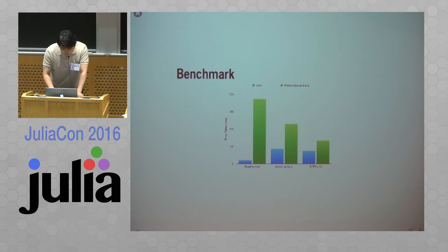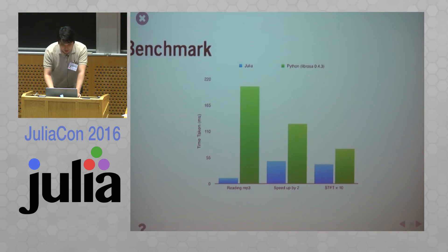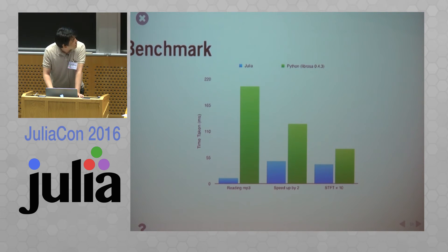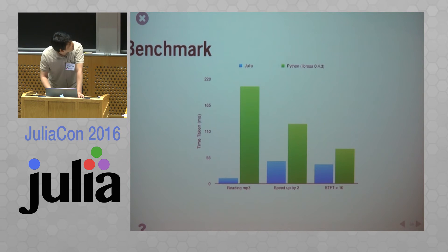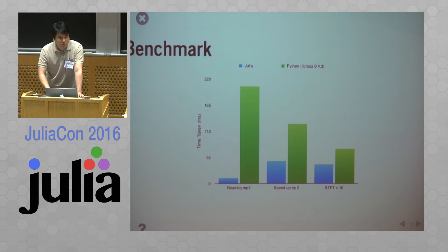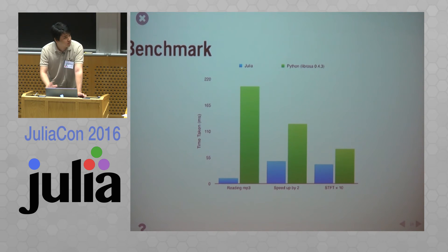MFCC is a very widely used audio feature — it is just the discrete cosine transform of the mel spectrogram. I ran a small benchmark comparing the performance of Julia and Librosa. Julia is a lot faster in reading MP3 files, speeding up audio, and computing the short-time Fourier transform. In all these cases they are both calling the underlying C library, so I think this difference shows Julia's capability of effectively calling native libraries.